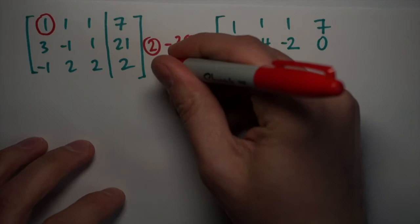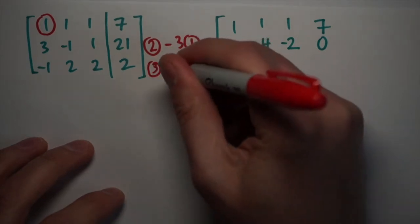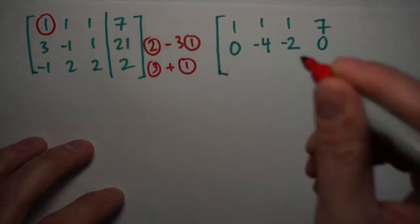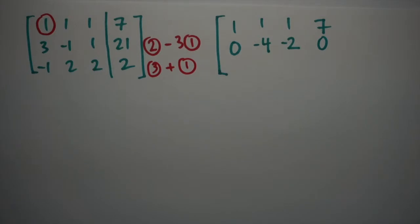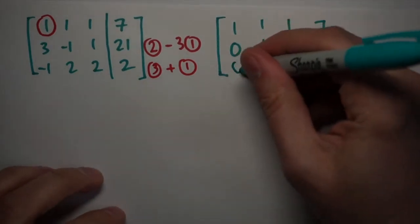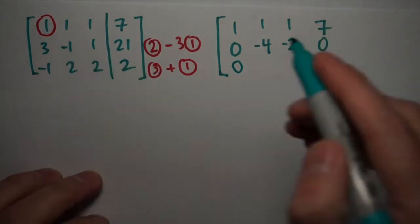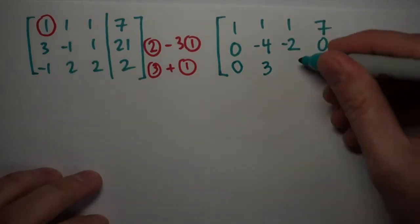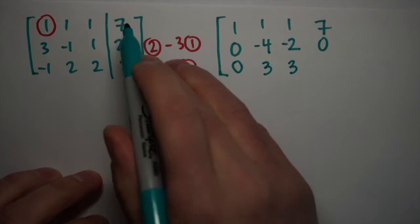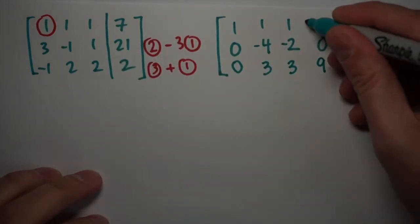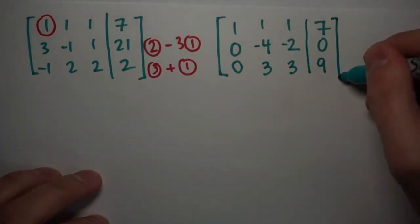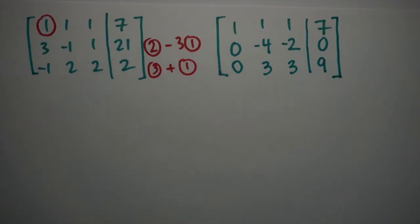To eliminate the negative one in the last row, I'm going to take row three and add to it row one, because minus one plus one will give me zero. So when I do that, my row becomes zero. That's why I chose the action I did. Two plus one is three, two plus one is three, and two plus seven is nine. And so after my first set of actions, I was able to get rid of everything except for the one in the first column. And that's good. That's the first step.